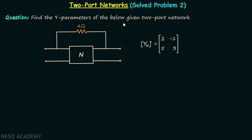Find the Y parameters of the given 2-port network. A 4-ohm resistor is connected across network N, which is a 2-port network, and the Y parameters matrix of network N is given in the question. You are required to find the Y parameters of the overall network. Pause this video and try to solve this question on your own.